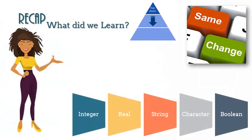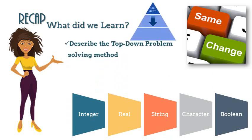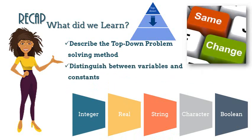Now as usual, let's recap what we learned in the previous session. We looked at the top-down problem solving method. We also were able to distinguish between what was a variable and what is a constant. And lastly, we were able to look at the different data types.